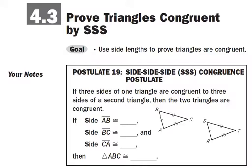Now, what we're going to do over the next few sections is learn some shortcuts for that. Today we're going to learn our first shortcut so that you don't have to prove that six different things are congruent in order to show that two triangles are congruent. The first one is called the Side-Side-Side Congruence Postulate — you can abbreviate that SSS for Side-Side-Side.